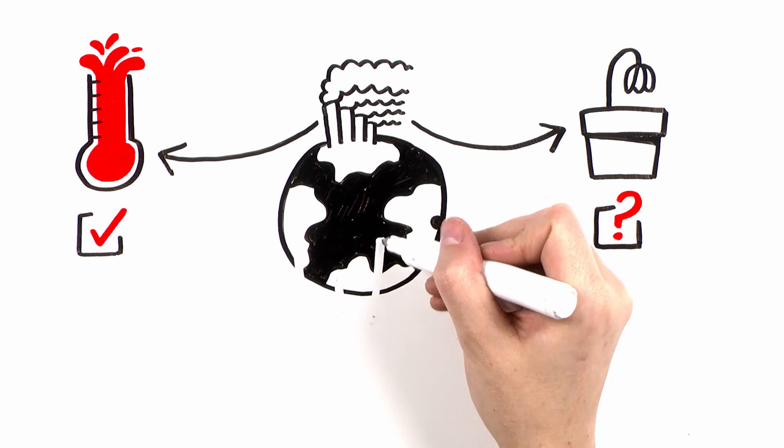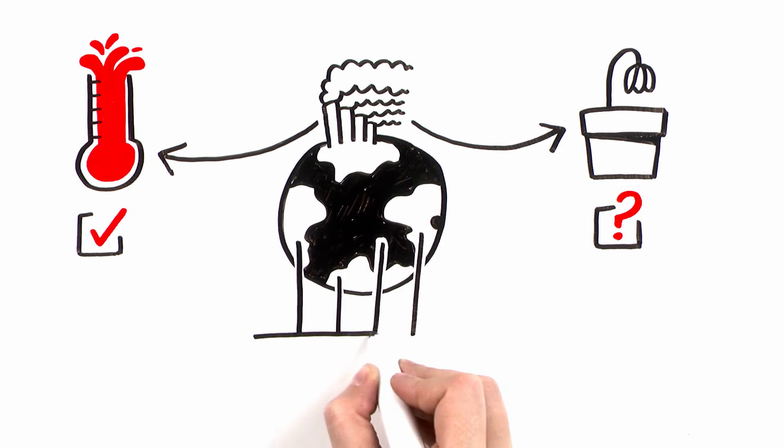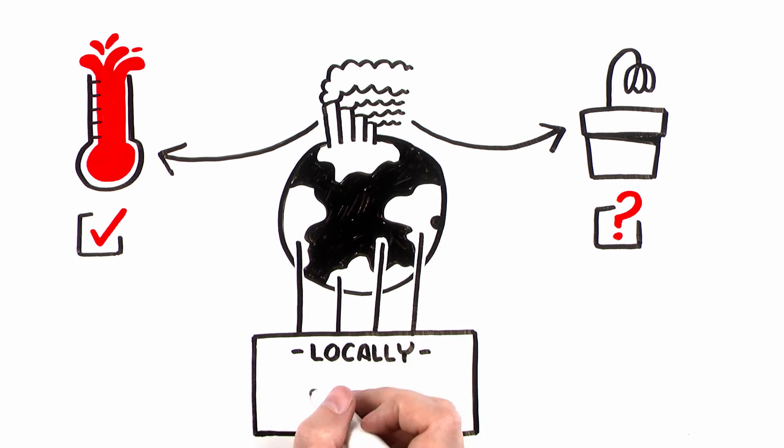In particular, even though we expect the risk of heat waves and downpours to increase globally, locally other factors, including changes in weather patterns, might act against the expected trends.